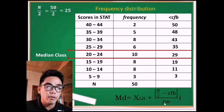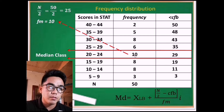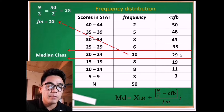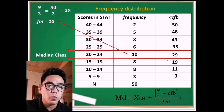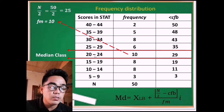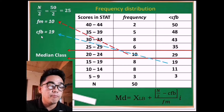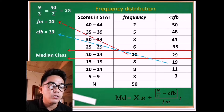Now that we have identified the median class, we can easily determine FM — the frequency of the median class — which is 10. For CFB, which is the cumulative frequency before the median class, we look at the value immediately before the class interval 20–24. That value is 19, not 35. Therefore, CFB equals 19. The median class is highlighted with the red line.